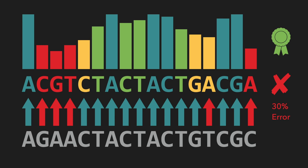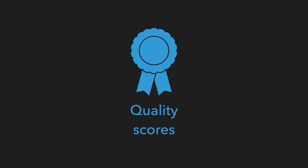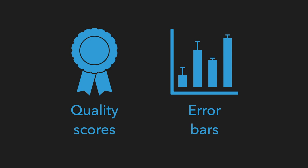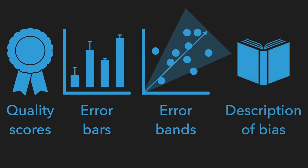Therefore, it is of the utmost importance that we always study our data in conjunction with a metric of uncertainty. This could be quality scores or indexes, often expressed as a function of the probability of error, but it can also be error bars, which graphically represent the standard error of a single continuous measurement, or the two-dimensional cousins — the error bands — which represent the expected error in a given correlation between continuous variables. Also, it's hard to precisely quantify the quality of some data, but qualitative information is also of great value, so describing potential or known biases goes a long way.